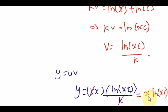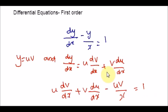You can produce a graph of this solution for various values of c, giving a nice family of curves. Those curves are the solution to the original equation — dy over dx minus y over x equals 1. This is a very special case of a linear first order differential equation.